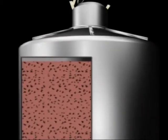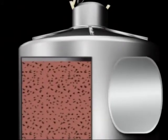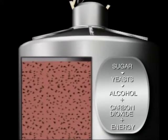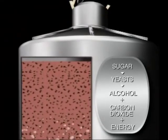Yeasts, single-celled organisms which are found on the skins of grapes, are of course also present in the must. Fermentation occurs when these yeasts convert the sugars of the grape into alcohol.